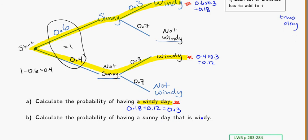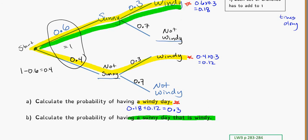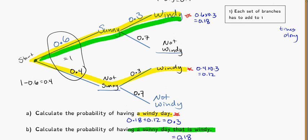Calculate the probability of having a sunny day that is windy. That's the branch for sunny and then windy. We've already calculated that — times along the branch: 0.6 times 0.3 equals 0.18. So with probability trees, a couple of things to remember: we always times along the branch. If there's more than one outcome you want, times along to the end for each, then add those probabilities together. For each set of possible outcomes, like sunny and not sunny, those probabilities need to add to 1 — so 0.6 plus 0.4 equals 1, and 0.3 plus 0.7 equals 1 as well.